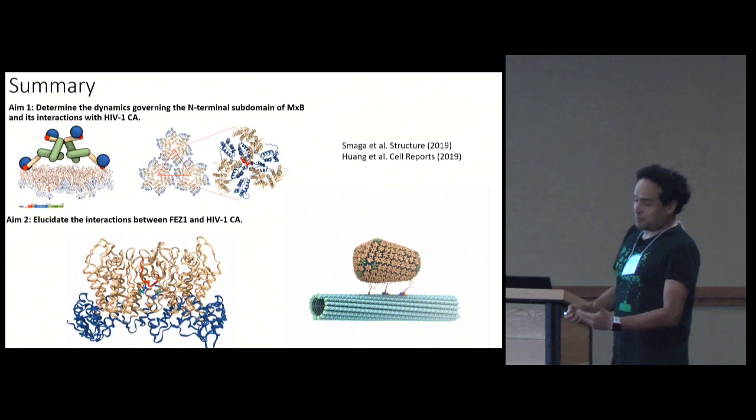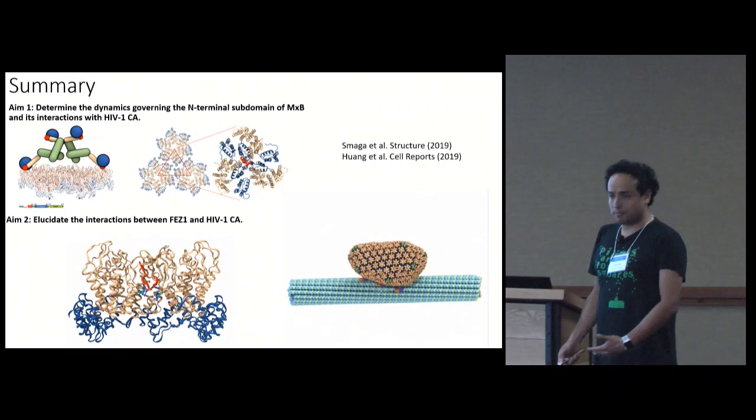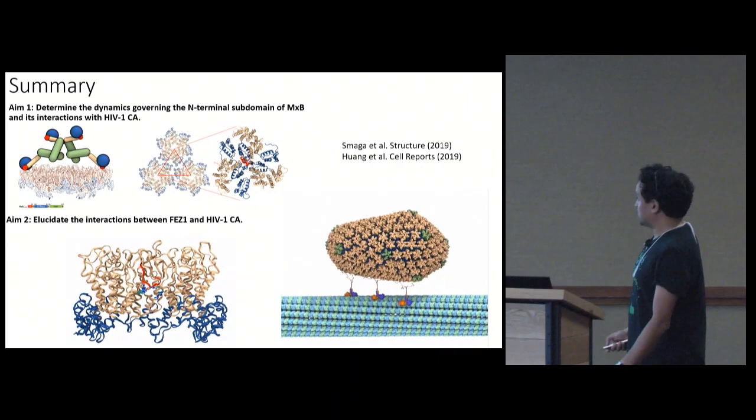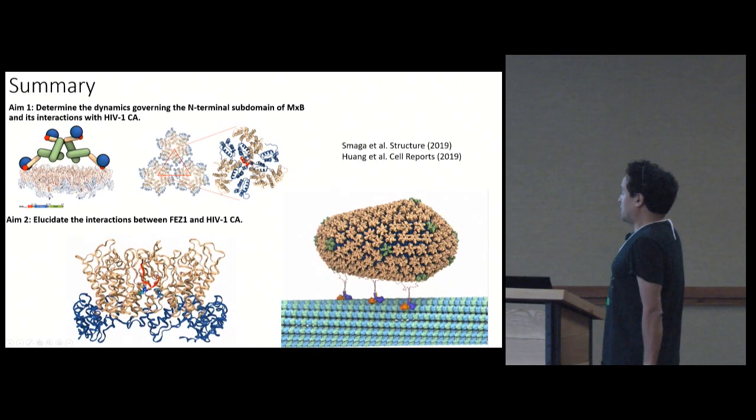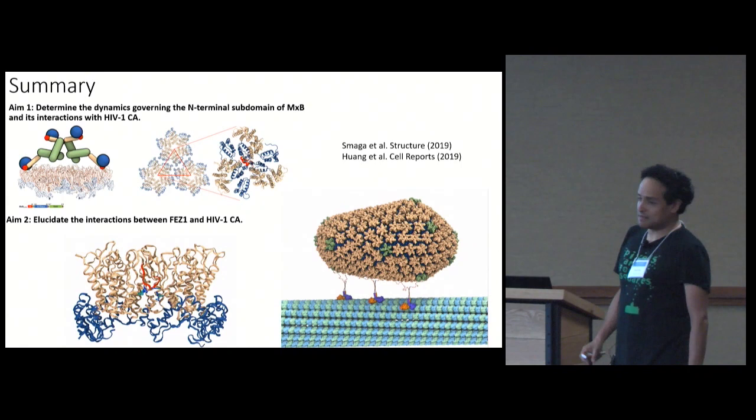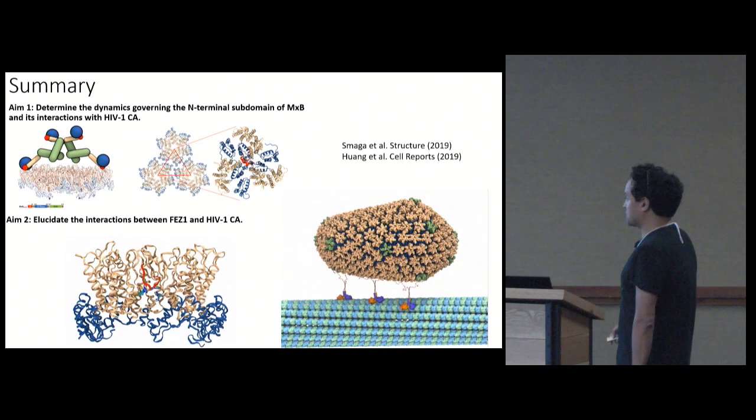One of the biggest challenges with capsid-protein interactions is that it involves intrinsically disordered proteins, which are not amenable to crystallography, NMR, or cryo-electron microscopy. We published that study in Cell Reports — it should be out in a couple of weeks. We're moving forward to establish the exact mechanism relating capsid, tubulin, and other motor proteins for capsid trafficking.